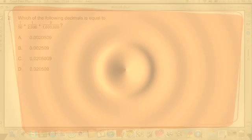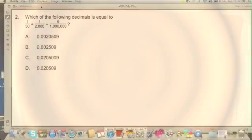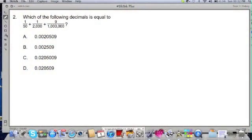First, we always want to look at the problem. And when we first look at a problem, you always want to look to see what are the clues. What clues does it tell us? So let's see. I'm going to read over the problem here. Which of the following decimals is equal to 1 over 50 plus 1 over 2,000 plus 9 over 1 million? And then it gives us these answer choices.